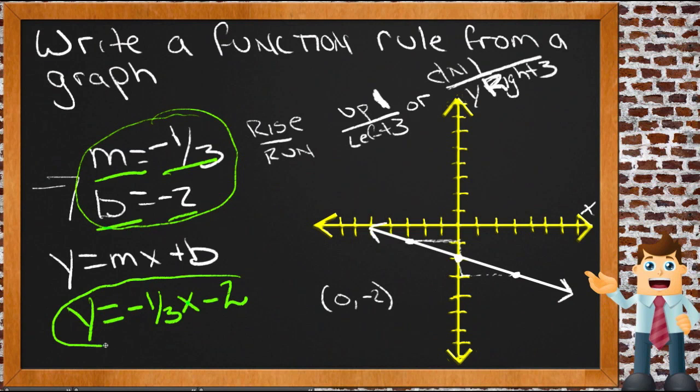And now we have the function rule, y equals negative one-third x minus two, for this line right here. And if you wanted to find any point on this line, all you'd have to do is pick a value for x, multiply it by negative one-third, and subtract two, you'd get the y value that goes with it, and that point would be right on this line somewhere.